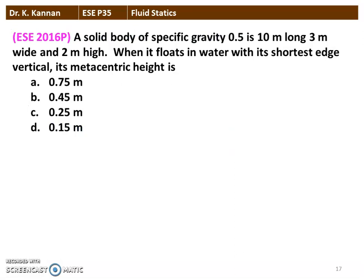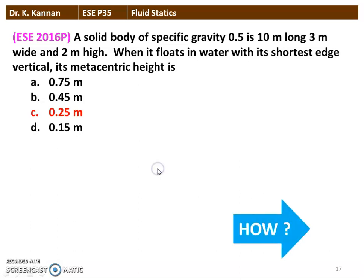The next question from the 2016 question paper. A solid body of specific gravity 0.5 is 10 meter long, 3 meter wide, and 2 meter high. When it floats in water with its shortest edge vertical, its metacentric height is — the correct option is 0.25 meter. We will see how in the next slide.